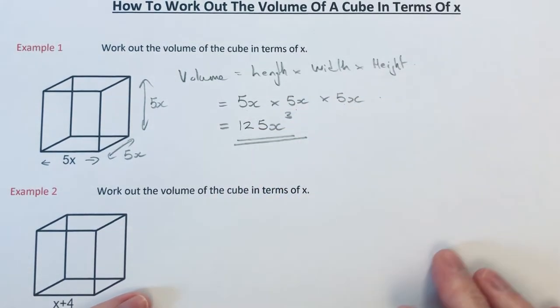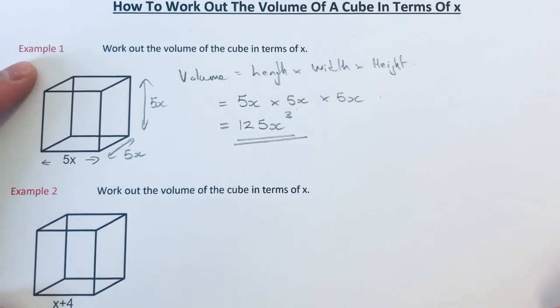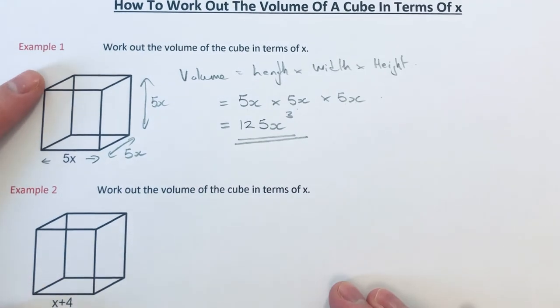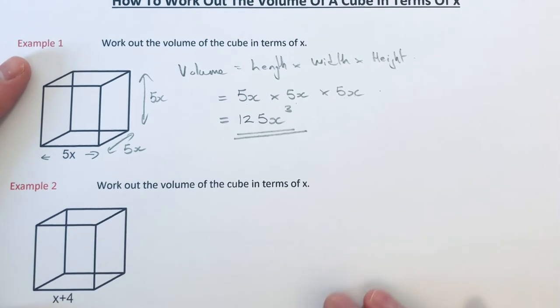So our final answer for the volume of the cube in terms of x is 125x cubed. So let's have a look at the second example.